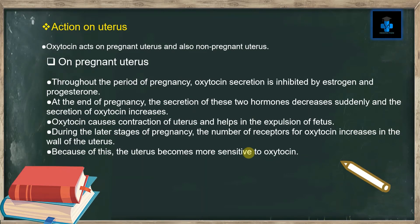Oxytocin acts on both the pregnant and non-pregnant uterus. Regarding the pregnant uterus: throughout the period of pregnancy, oxytocin secretion is inhibited by estrogen and progesterone. At the end of pregnancy, the secretion of these two hormones decreases suddenly, and the secretion of oxytocin is thus increased. Oxytocin causes contraction of the uterus and helps in the expulsion of the fetus.